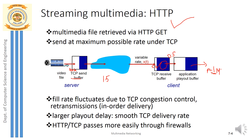HTTP streaming uses a URL request and HTTP response and happens over TCP. Prefetching also takes place — fetching frames or bytes of video in advance to maintain a reserve in the buffer. Interactivity is also available: play, pause, fast forward, and rewind. Examples of HTTP streaming applications are YouTube and Netflix.